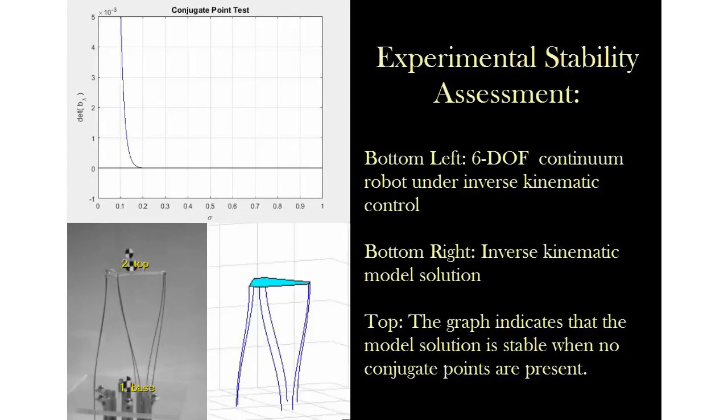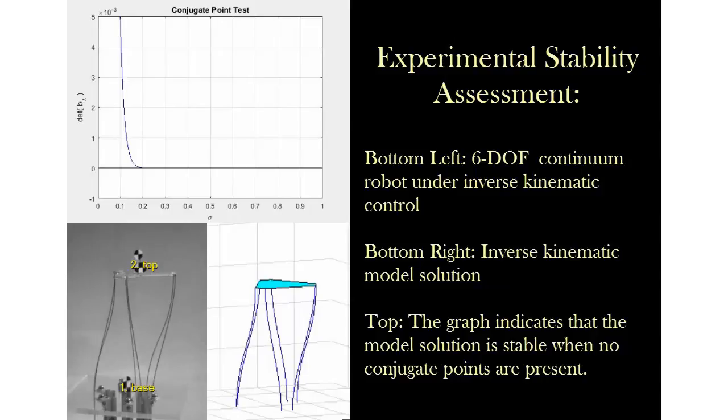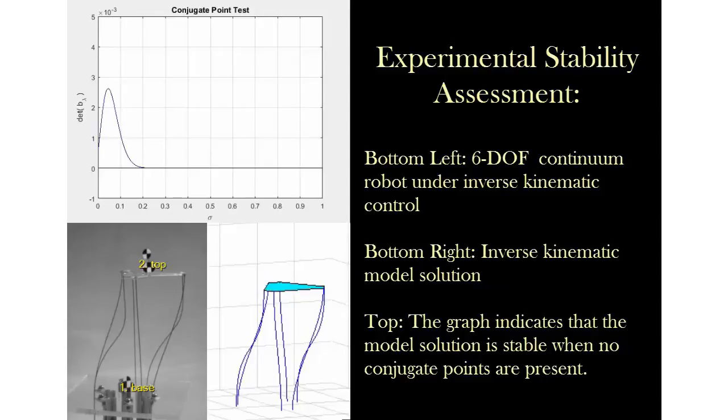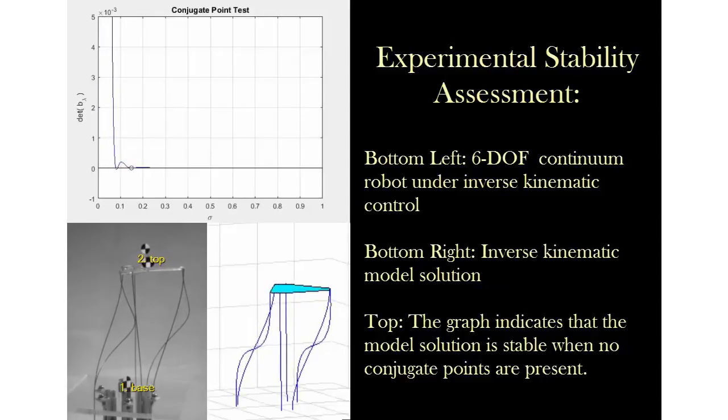In this video, the robot starts from a centered configuration and translates until it becomes unstable. At the moment of instability, the numerical solution no longer describes the physical reality of the robot. The conjugate point test indicates that instability is occurring, so we are able to mathematically verify which robot configurations are stable.